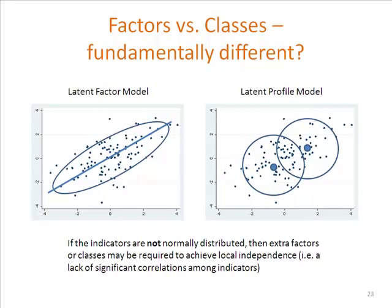Having said that, if the indicators are not normally distributed, you might find that extra factors or classes have to be extracted to try and achieve conditional independence. So if you're using exploratory procedures to work out how many latent bits of structure exist, you might find you start extracting too many if you start violating your assumptions. But generally speaking, latent structure often comes down to a theoretical choice: how do you conceive of this thing operating at the latent level that you can't see? Sometimes there won't be any statistical way to look at the differences.